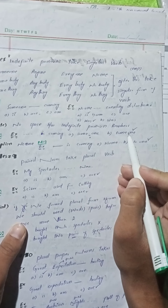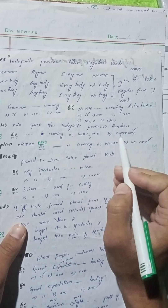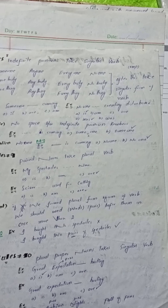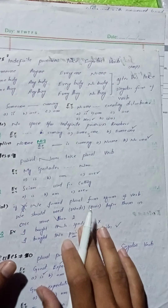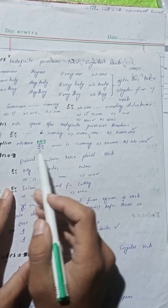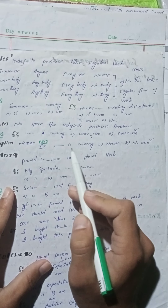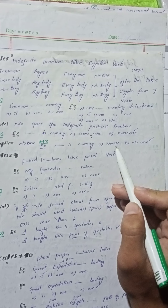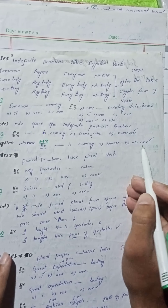Right option: option B (no space). لیکن ایک exception ہے جو competitive exams میں آتا ہے: 'no one' کے ساتھ آپ space use کر سکتے ہیں۔ باقی تمام indefinite pronouns کے ساتھ space use نہیں کرنا، لیکن 'no one' کے ساتھ space acceptable ہے۔ MCQ: '___ is coming' — یہاں 'no one' کے ساتھ space use ہو سکتی ہے۔ Right option: option B.